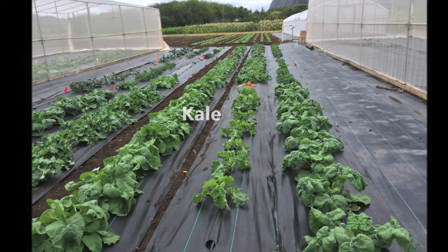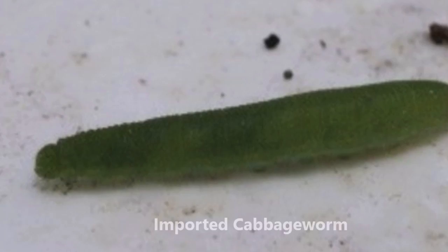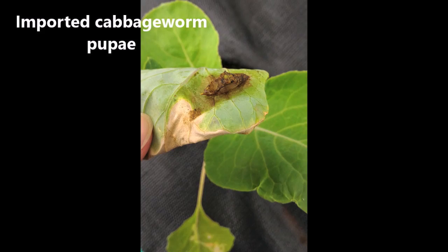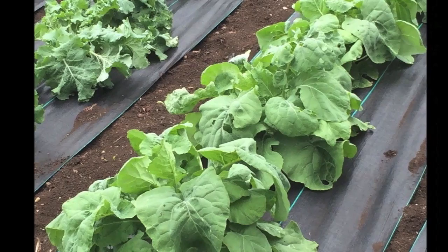Lepidopteran pests were most abundant in a kale cropping system, which included the diamondback moth, imported cabbage worm, and the cabbage webworm. Lepidopteran resistance to insecticides provides incentive to look into attracting beneficial insects with insectary systems.